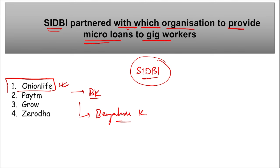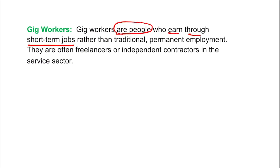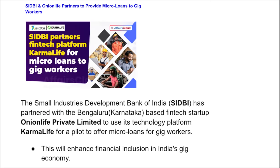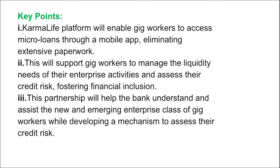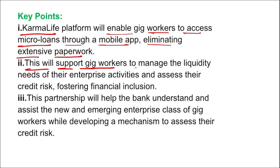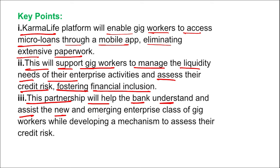Gig workers are people who earn through short-term jobs rather than traditional permanent employment — they are often freelancers or independent contractors in the service sector. SIDBI partnered with Bengaluru-based fintech startup Onion Life Private Limited to use the technology platform Karma Life for a pilot to offer micro-loans to gig workers. This will enhance financial inclusion in India's gig economy. The Karma Life platform will enable gig workers to access micro-loans through a mobile app, eliminating extensive paperwork. This will support gig workers to manage liquidity needs and assess their credit risk.